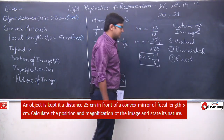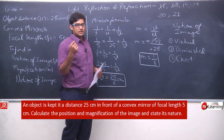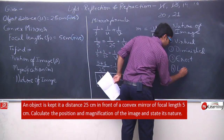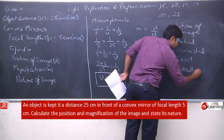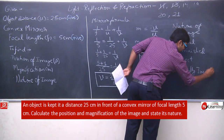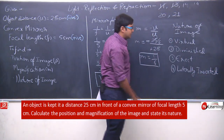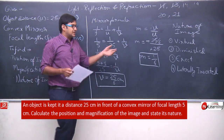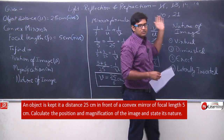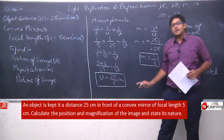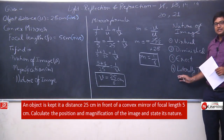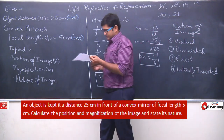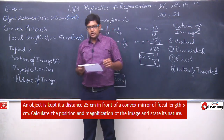Since it is a virtual image, the image is erect. Virtual images are always erect and also laterally inverted. So the nature of the image is: virtual, diminished, erect, and laterally inverted. Without drawing a ray diagram, just by finding these two values, we determined the complete nature of the image. I hope question number 14 is very clear.